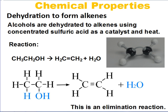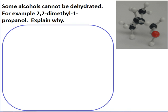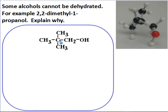But not all alcohols undergo elimination. If you have a look at this structure here — 2,2-dimethyl-1-propanol — you see that the OH group is bonded to this carbon, but the carbon next door that it should be able to form a double bond with has no hydrogens attached, only methyl groups.